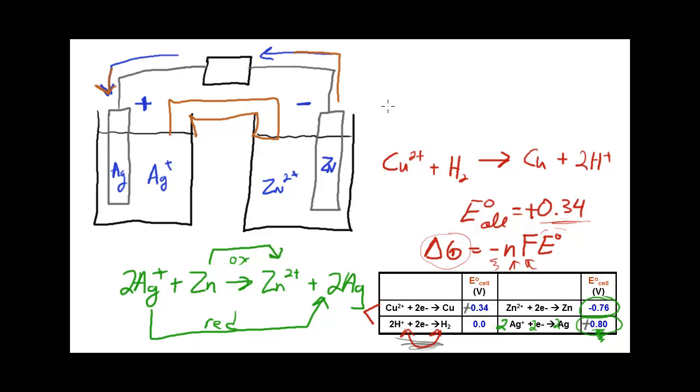The overall cell voltage for this, measured here on the voltmeter, would be 0.80 plus this number here now reversed in sign because I flipped the reaction, plus 0.76, so I would get a total of 1.56 volts for my measured cell potential. That's the simple explanation of taking half reactions to construct a device like a basic battery.